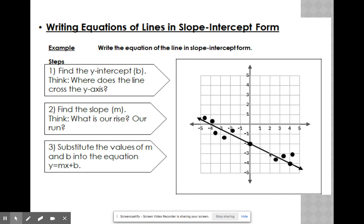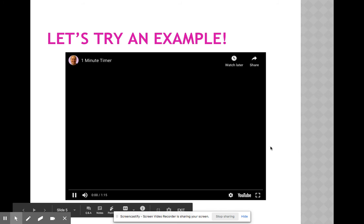Once you have that, you're going to substitute those answers into your equation and solve. So your m is negative 1 over 2, and your y-intercept is negative 2. So your equation is going to be y equals negative 1 over 2x minus 2.